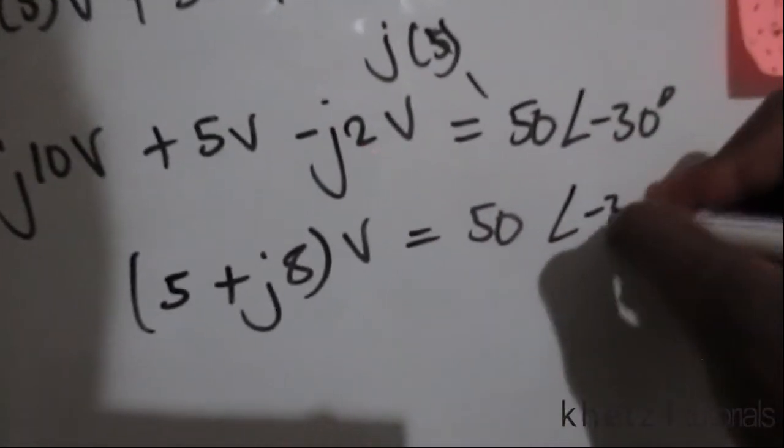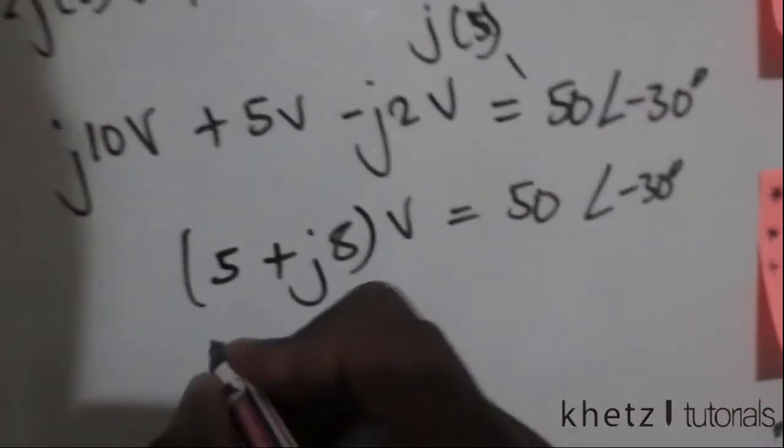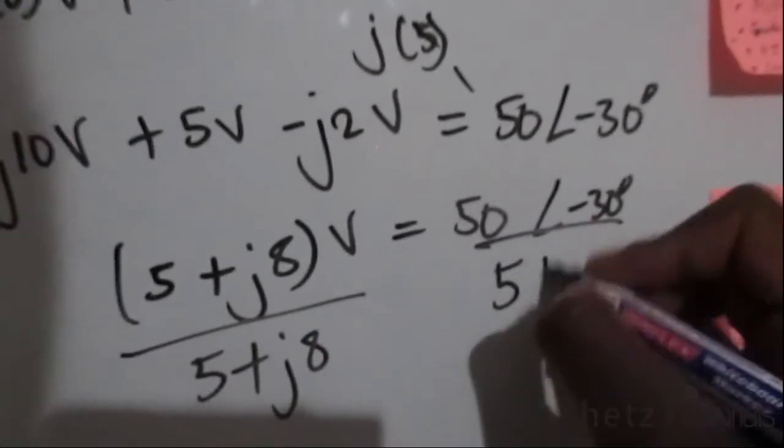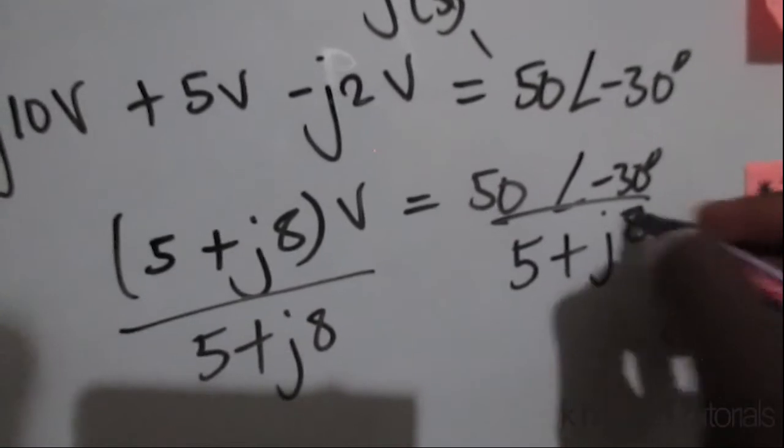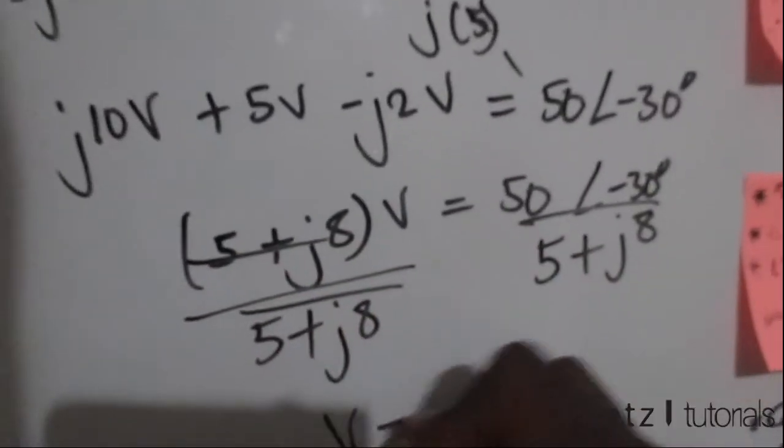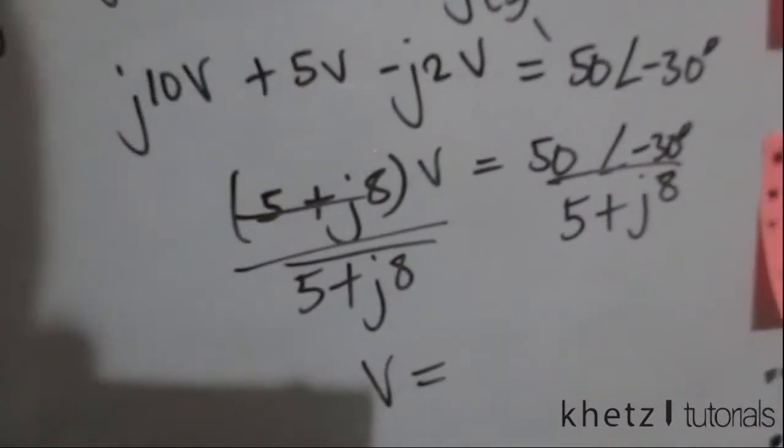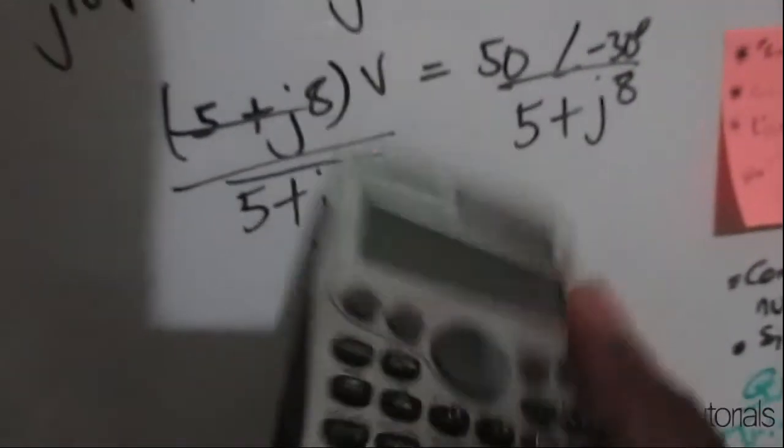This equals to 50 at an angle of negative 30. We're going to divide both sides by 5 plus j8, and this will cancel out which means we're left with just the V on this side. Now all we have to do is just punch this into our calculator.